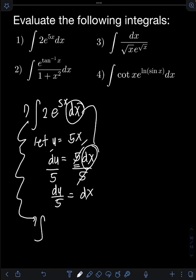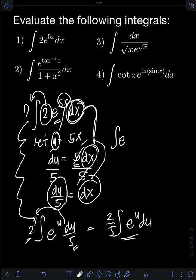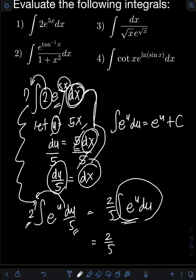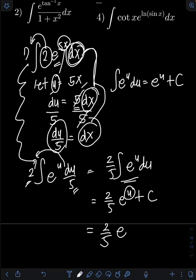Substituting into the original integral: the 2 is constant so we put it in front. We have 2 times the integral of e raised to u (replacing 5x), and dx becomes du over 5, so 1/5 is also pulled out front. That gives 2/5 times the integral of e raised to u du, which equals 2/5 times e raised to u plus c. Transforming back, u equals 5x, so the final answer is 2/5 e raised to 5x plus c.